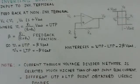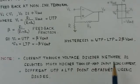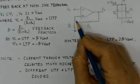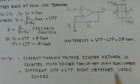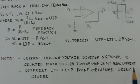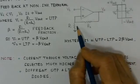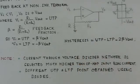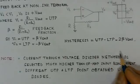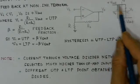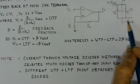Some important design points to note: the current through the voltage divider network (R1 and R2) should be selected much higher than the op-amp input bias currents. Also, different UTP and LTP points can be obtained by using diodes in the feedback path, which allows different operating voltages for UTP and LTP. This hysteresis characteristic is a very important part of the Schmitt trigger.